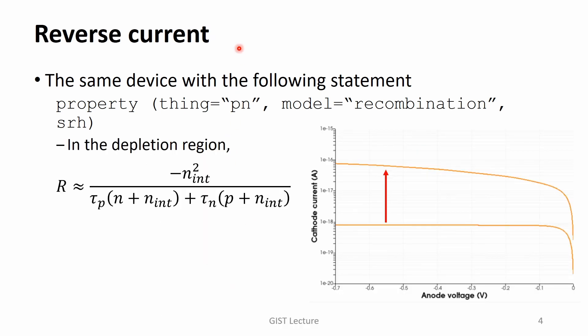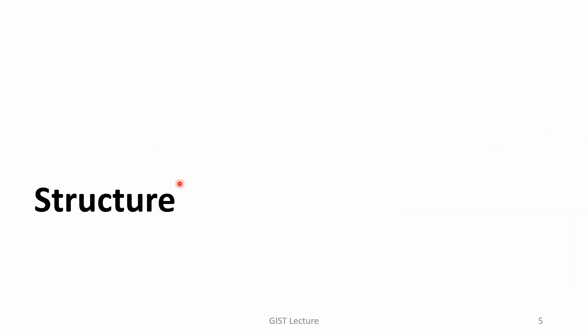Now, the reverse current. Again, we can observe an increased current level. In the reverse bias, the NP product is negligible. So, the recombination rate R is simply given by this form. Note that the sign of R is negative. It means that electron hole pairs are generated. Generated electrons and holes are moved to the N-type and P-type regions respectively, so they additionally contribute to the current.